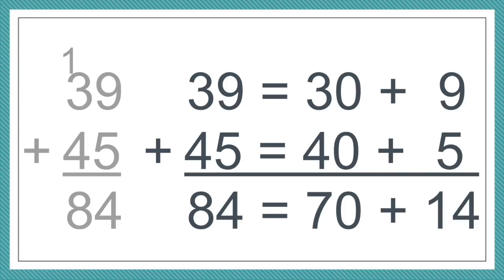That's why there's been such a push to build conceptual understanding. With 39 plus 45, instead of just the procedure, we want kids to understand that within 39 is a 30 and a 9, and 45 is really a 40 and a 5 — they can add the ones, add the tens, and put them together, making the connection to the procedure. But it's not enough to just build conceptual understanding — kids do need to build their procedural fluency too. The standards talk about that. Kids need both pieces.